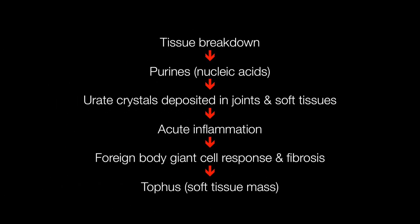Here is how gout develops. First, there is tissue breakdown releasing purines from the nucleic acids when nuclei break down. This causes sodium urate crystals to be deposited in joints and soft tissues. The crystals are phagocytosed by neutrophil polymorphs, resulting in florid acute inflammation. This eventually becomes chronic with a foreign body giant cell response and fibrosis, resulting in the formation of a tophus, or soft tissue mass.